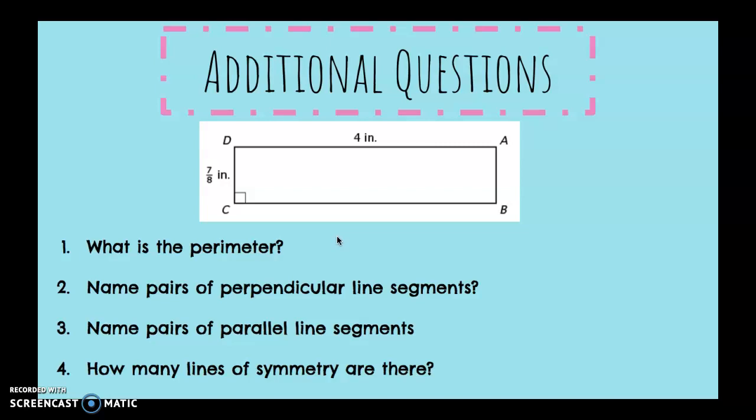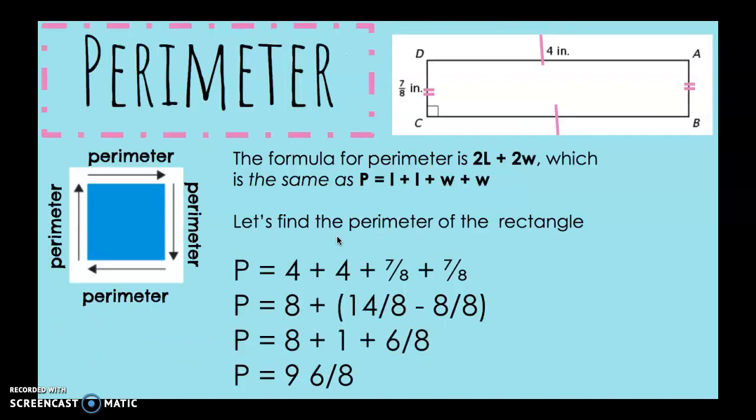Perimeter. Whenever I think about perimeter, I envision a fence. Perimeter is the measurements that are outside an object. The formula for perimeter is 2L + 2W, which is the same as P = l + l + w + w. So, let's find the perimeter of the rectangle.